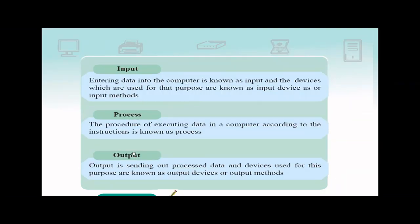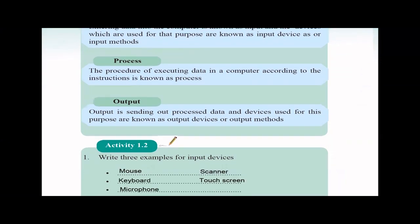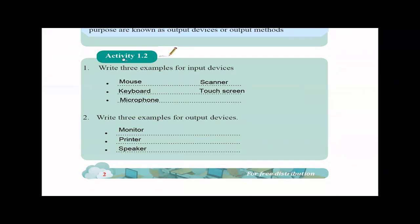So here they have given you some definitions. Input is entering data into a computer, and the devices which are used for that purpose, we call it as input devices or input methods. Process: the procedure of executing data in a computer according to the given instruction. So you get the data from the input devices and you process it, or you execute this data in a specific order of instruction. Then we call it as a process. Output is actually after you process the data, you will get information. So this information is sent. The devices used for that is called as output devices.